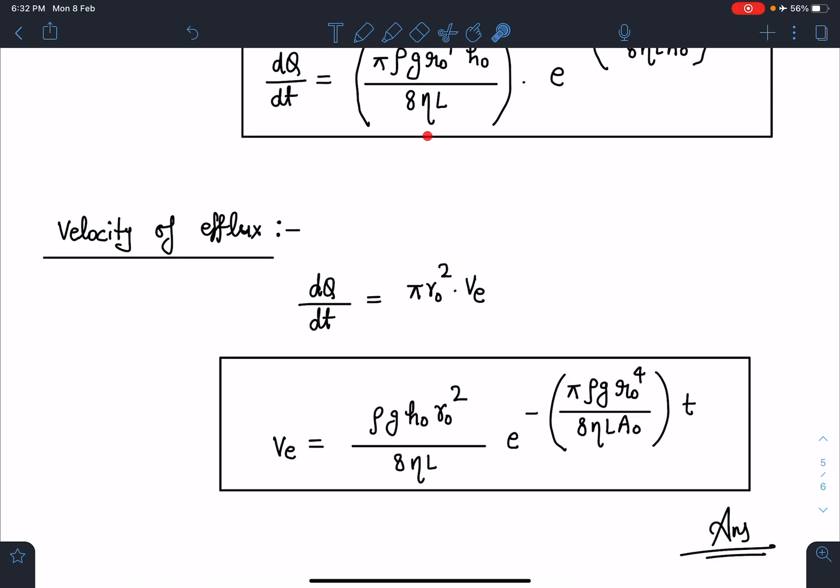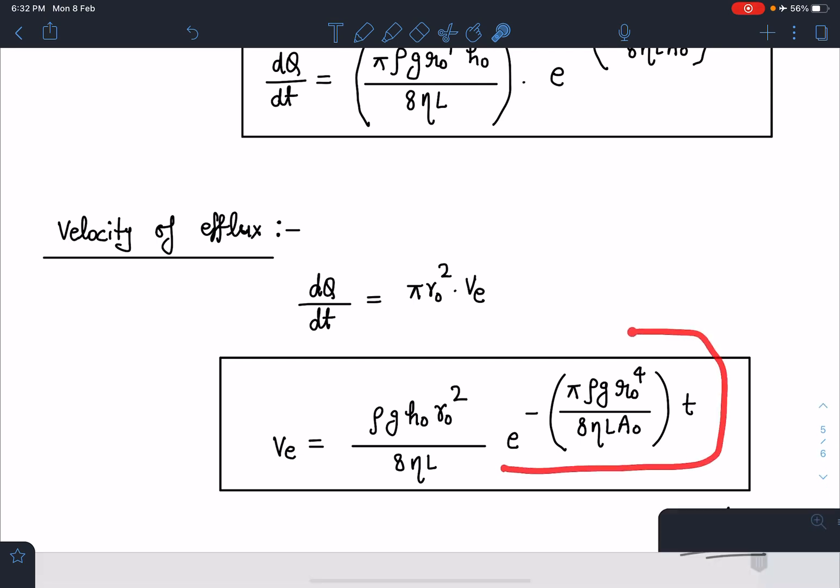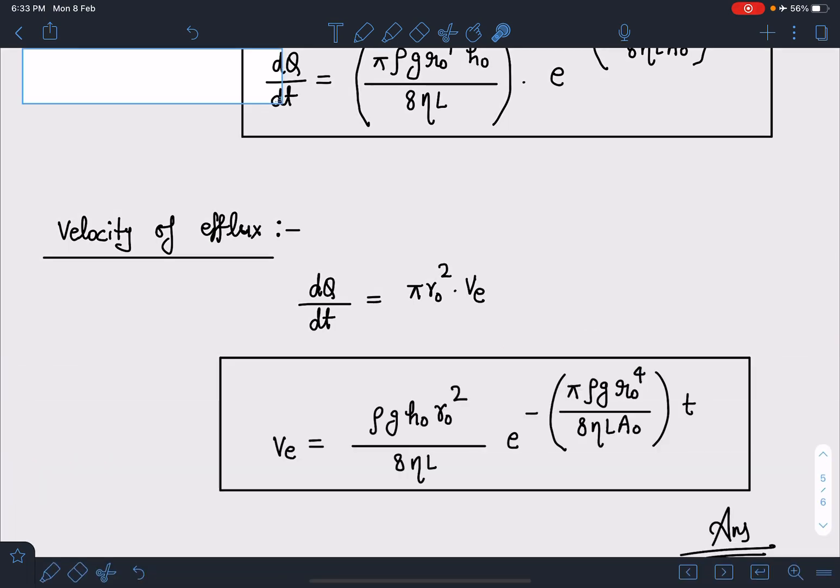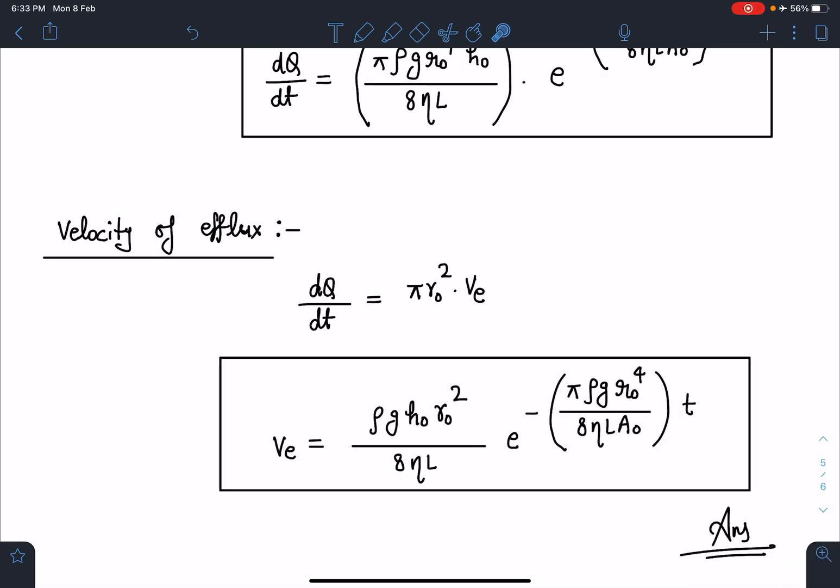Just the ve value I am going to get. Now after substituting this here, I am going to get ve = (ρg h₀ r²)/(8ηL) × e^(-(πρg r₀⁴)/(8ηL A₀) × t). This is going to be the final answer.